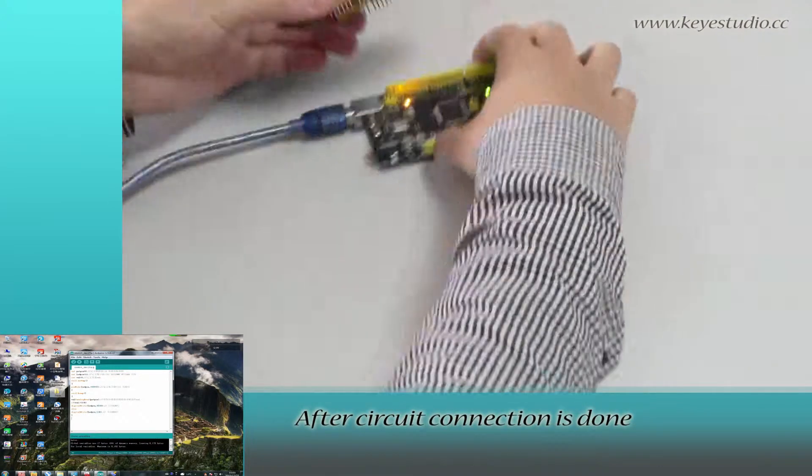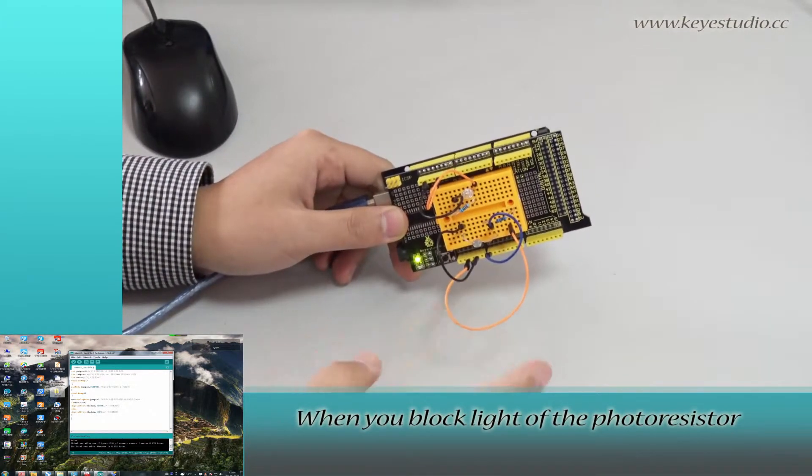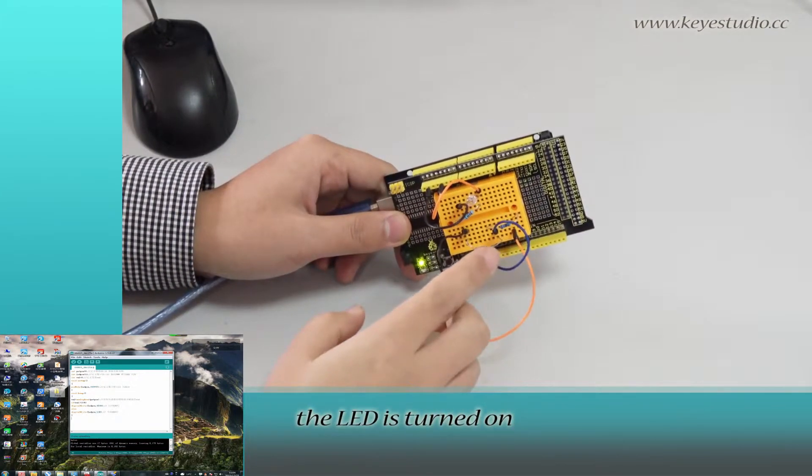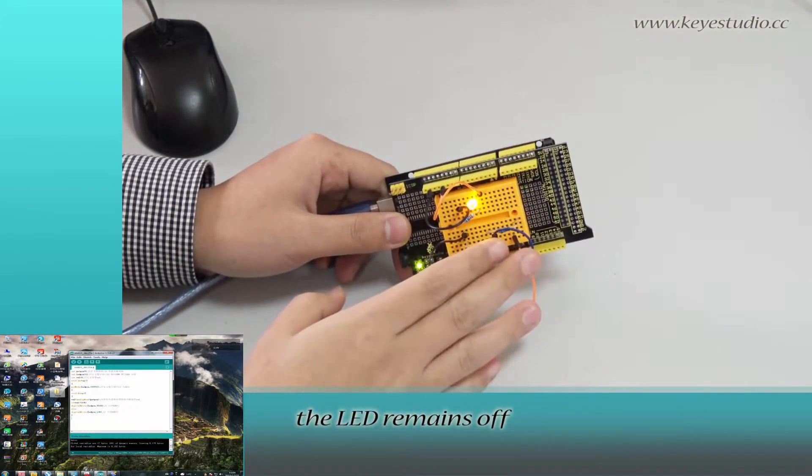After circuit connection is done, stack the shield on the Mega board. When you block light of the photoresistor, the LED is turned on. When there is light, the LED remains off.